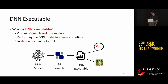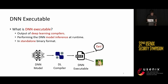What is a DNN executable? Basically, a DNN executable is the standalone binary format of the DNN model generated by deep learning compilers. It has exactly the same functionality as the original DNN model. For example, if we compile an image classification model into a DNN executable, and feed an image to the executable, it will return the same label. Inside the DNN executable, the same DNN inference is performed during runtime.